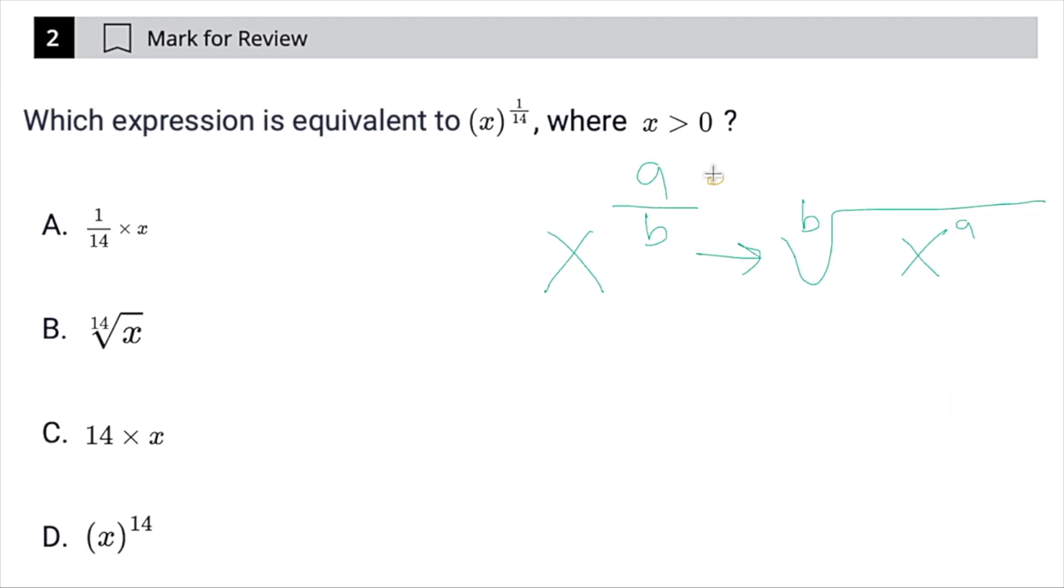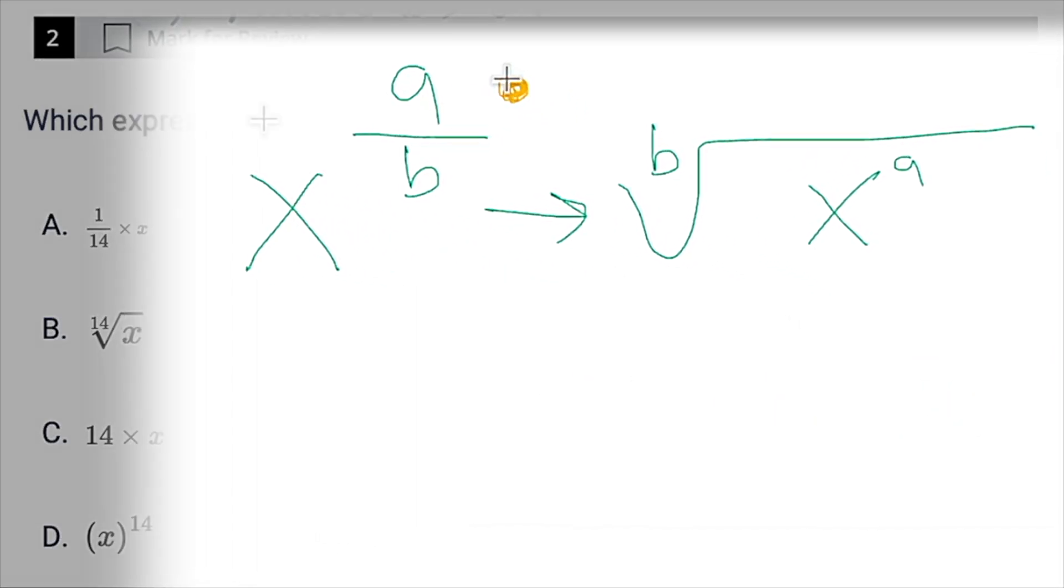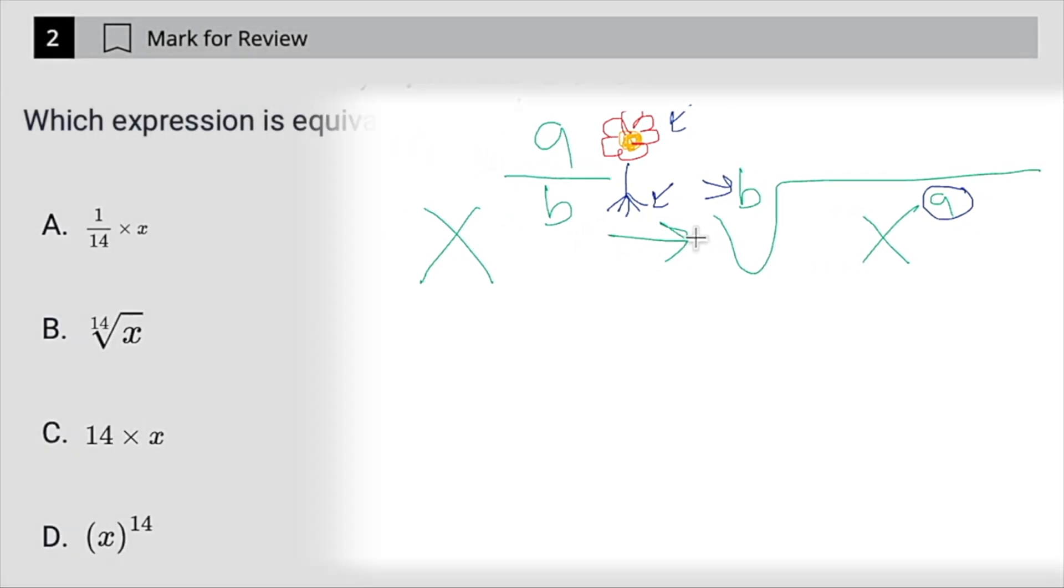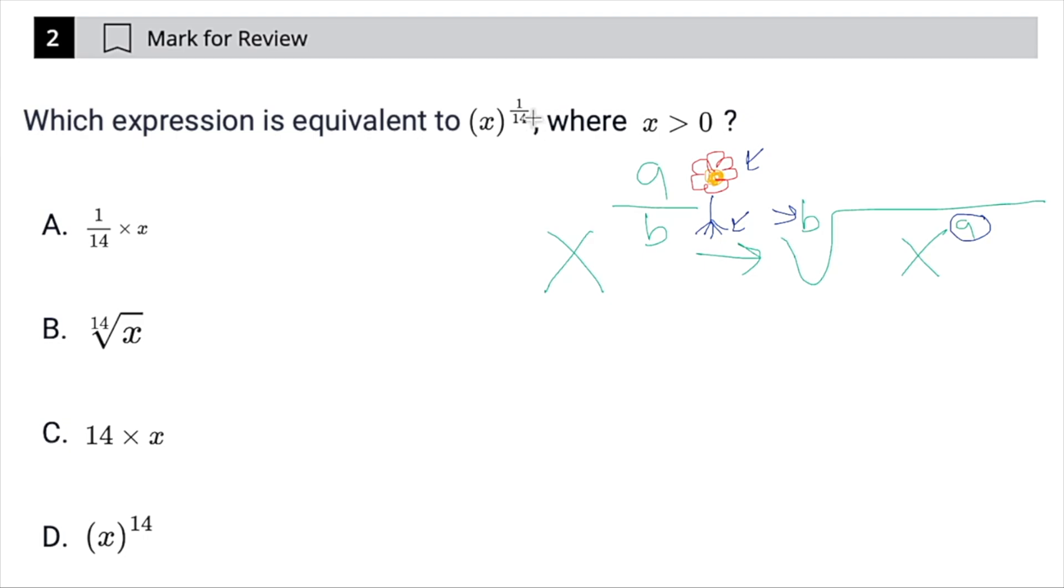You can also imagine a beautiful flower sprouting out of the ground. And if this is our flower, and this is the roots of the flower, you remember the flower is the power, and the root is the root. So a couple of different ways of memorizing that. Anyway, regardless, our flower power is going to be x to the first power, which is the same as just x. And then the root being 14 would be obviously choice b here.